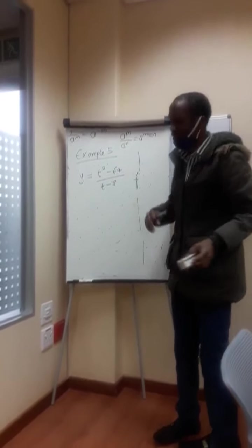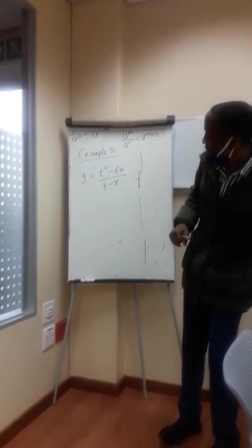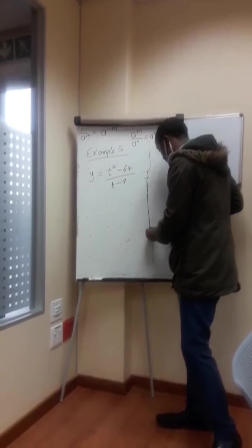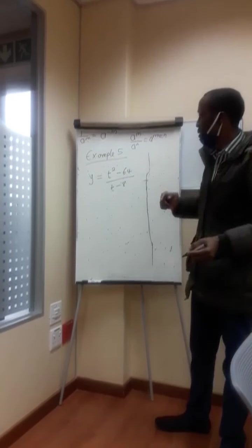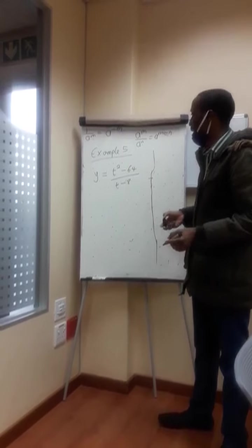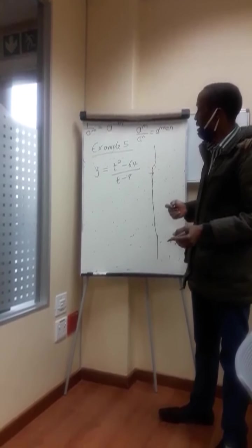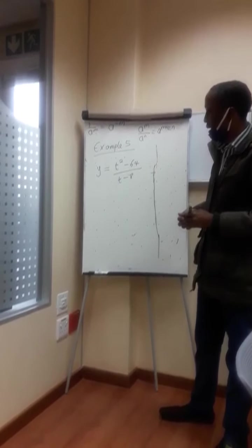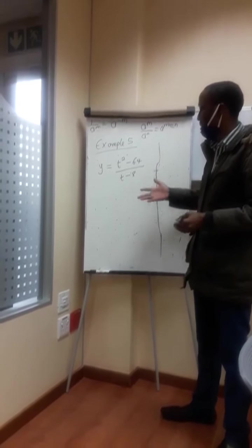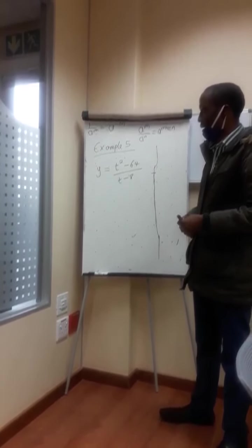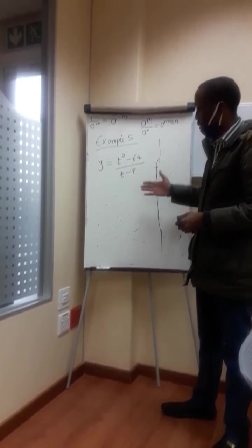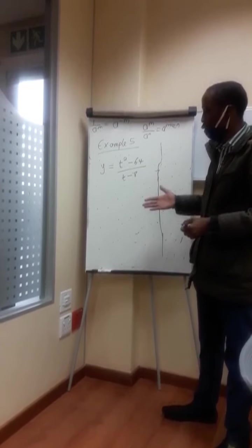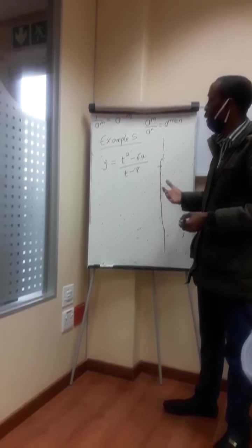So in this case, if you want to differentiate this, you've got y equal to t squared minus 64 divided by t minus 8. To differentiate this, I will first check: is there a way of simplifying this mathematical function further? If yes, then I can proceed to split it. If no, then there's another approach — the quotient rule.